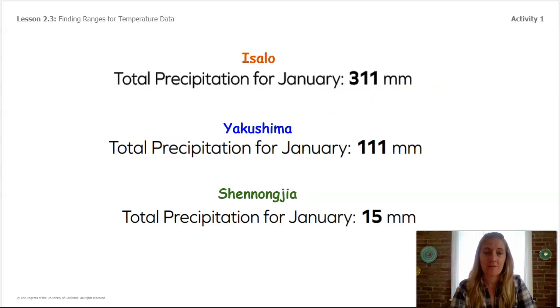Here is the precipitation data for all three places. The numbers are in bold, so you can see Isalo had 311 millimeters. The next is 111 millimeters, and the one at the bottom is only 15 millimeters.